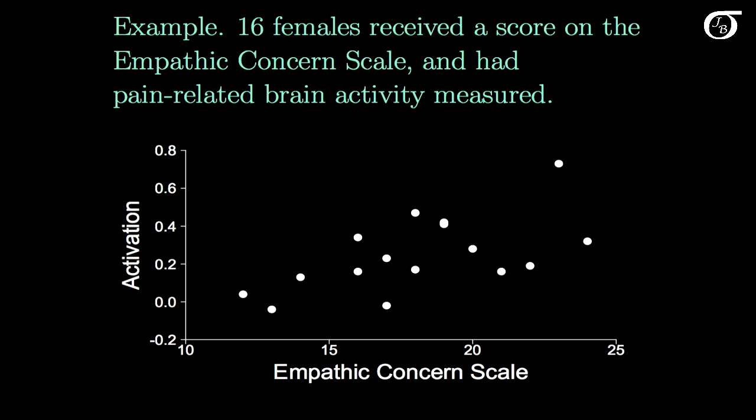Here's an example we looked at previously. 16 females received a score on the empathic concern scale and had pain-related brain activity measured. This is our empathic concern scale x, and here's our activation level in the pain centers of the brain, that's y. The main point of interest in this study was seeing if there was strong evidence of a relationship between these two variables. It certainly looks like there's an increasing trend here, and we could fit a line through these points.